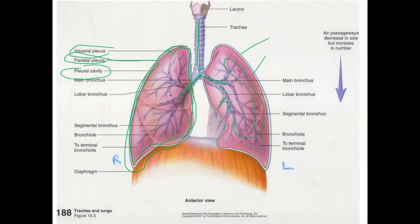The right lung has three lobes; you can see where the lines create those divisions. The left lung only has two lobes, and you can see the line that separates them.